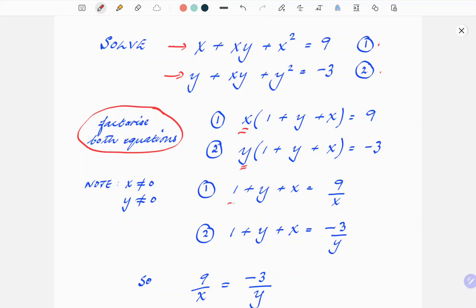Rearranging both of those to get 1 plus y plus x on its own, in both cases, gives us the result 9 over x. So 1 plus y plus x equals 9 over x from equation 1. And for the second equation, 1 plus y plus x equals minus 3 over y.